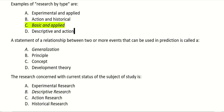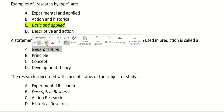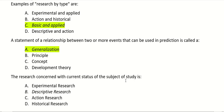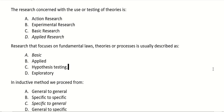A statement of relationship between two or more events that can be used in prediction is called: a generalization, principle, concept, or theory? The right answer is generalization. The research concerned with the current status of the subject of study is descriptive research. The research concerned with the use or testing of theory is applied research.